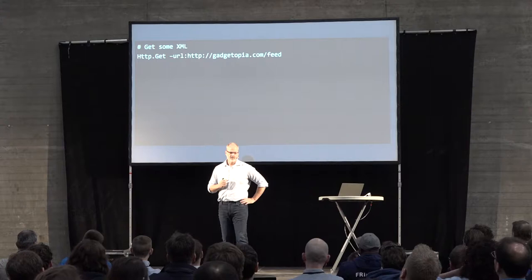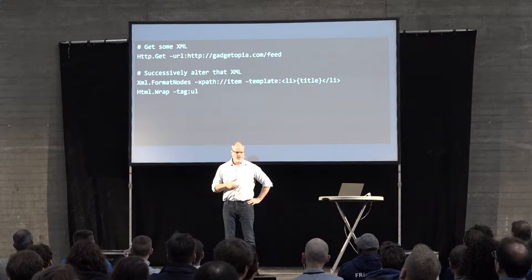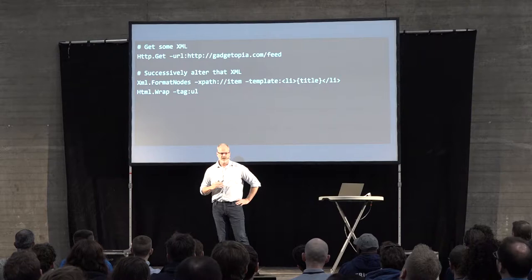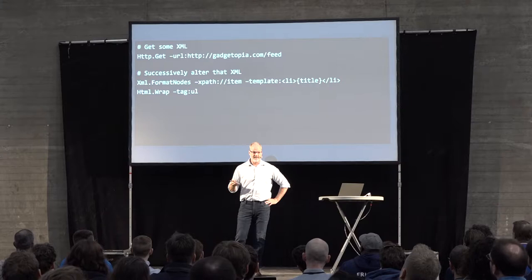Here's another example. We are actually making an HTTP call — calling Gadgetopia's RSS feed. We've now read that in. We have xml.formatNodes doing an XPath of items to get the individual items, and we're putting the title of those items in a list item. Then we wrap that in an unordered list and output. So we're taking the RSS feed from Gadgetopia, turning it into a bulleted list, and putting it out.